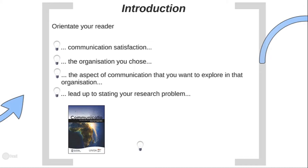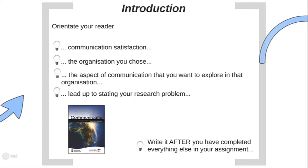I suggest all my postgraduate students read the introductions of academic communication texts, such as articles, to see what is done there. A good starting point is the academic journal Communicatio, published in our department. If you don't know how to access it, watch the video on using Google Scholar and the UNISA Library. A good tip: I always write my introductions after I've done everything else, because then I have a better view of what I did and I'm better equipped to tell my reader what to expect.